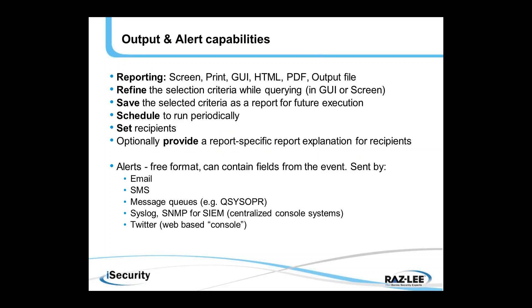AP Journal has output and alert capabilities. We report to various output media including email with HTML or PDF attachments. The user can refine the selection criteria, save these criteria, schedule the report to run on a predetermined schedule — daily, weekly, etc. — set the recipients, and optionally provide a report-specific explanation for recipients so they understand what they're looking at. The alerts are in free format and can actually contain fields originating in the event, so at runtime, in real time, at the time the message is sent, data from the event itself gets replaced in the free-format message that was defined.